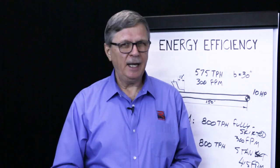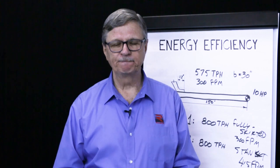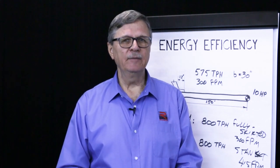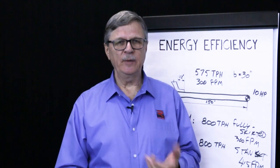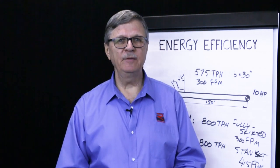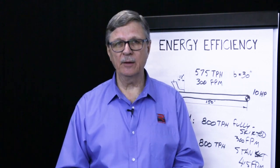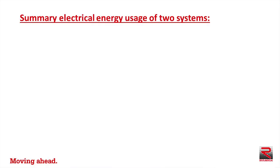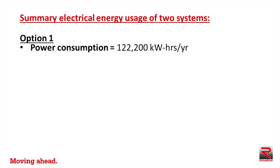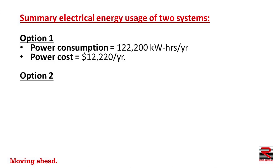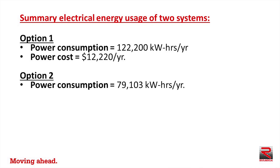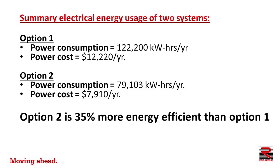Each option required the purchase of a new drive system. The previous video showed that if the facility runs 24 hours a day, 365 days per year, and the electric utility charges 10 cents per kilowatt hour, option one would have a power consumption of 122,200 kilowatt hours per year at an annual cost of $12,220. Option two would have a power consumption of 79,103 kilowatt hours per year at an annual cost of just over $7,900 — making option two thirty-five percent more energy efficient than option one.